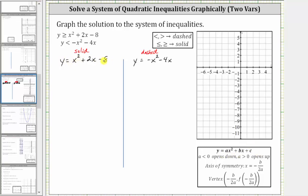For the first function, a — the coefficient of x squared — is one, b is positive two, and c is negative eight. For the second quadratic function, a is negative one because we have negative x squared, b is negative four, and c is zero — there is no constant on the right. Because a is positive for the first function, the parabola opens up, and for the second graph, because a is negative, the parabola opens down.